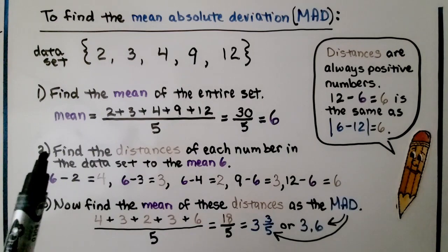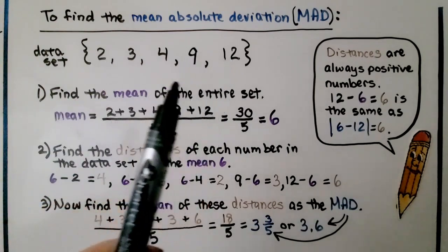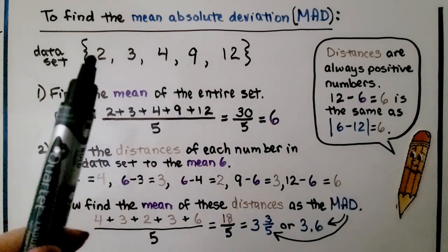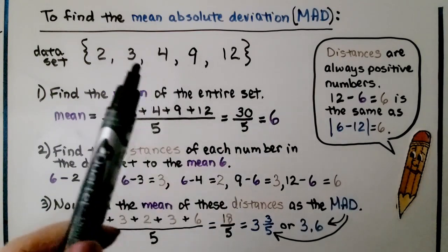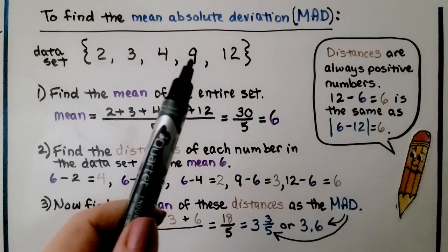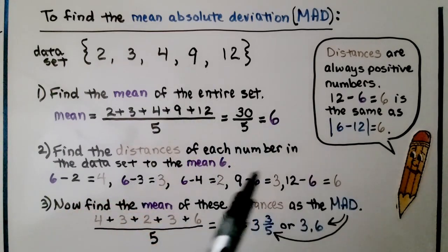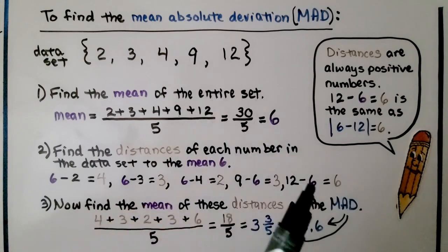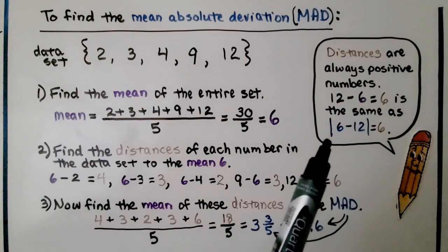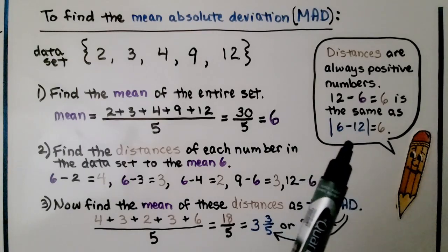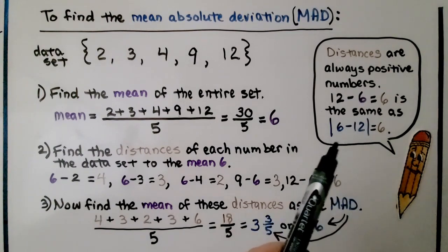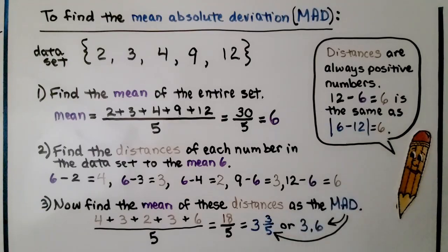Next, we find the distances of each of these numbers in the data set to the mean, 6. The distance between them: 6 minus 2 is 4; 6 minus 3 is 3; 6 minus 4 is 2; 9 minus 6 is 3; and 12 minus 6 is 6. Distances are always positive numbers. 12 minus 6 equals 6, which is the same as the absolute value of 6 minus 12 — we'd get a positive 6.